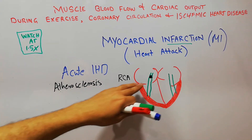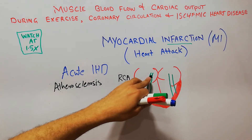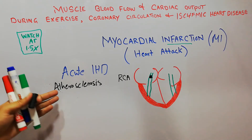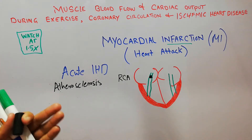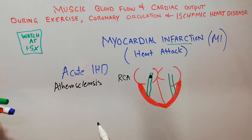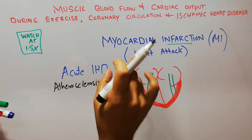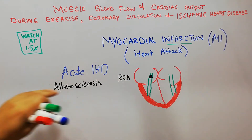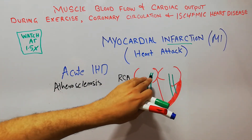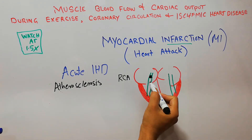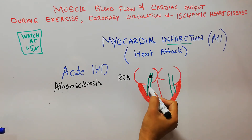Atherosclerosis is the deposition of cholesterol in the blood vessels. As the atherosclerotic process progresses, it disrupts the endothelial surface, blood cells start clotting there, and a clot — known as a thrombus — is formed. Due to thrombus formation, blood flow in the vessel is essentially stopped.